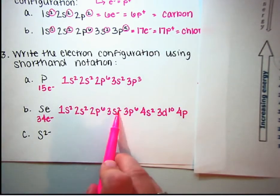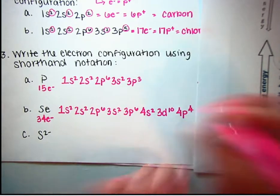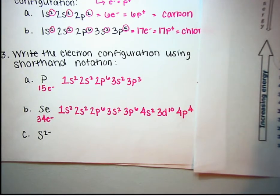After 3d comes 4p. 2, 4, 10, 12, 18, 20, 30, 4. So this would end in 4p4.